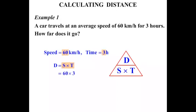So 60 times 3. We calculate 60 times 3, that equals 180 km. So there's our answer. The question was how far does it go? Let's write it in sentence form. The car travels 180 km.